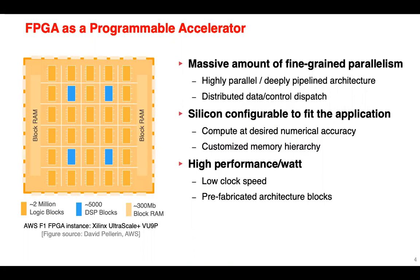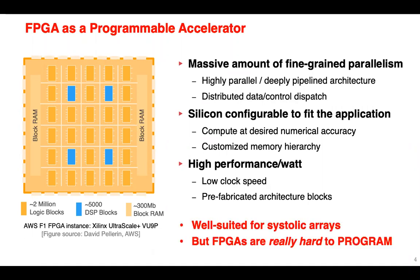FPGA is a good platform to implement all of these optimizations. The figure shown here is an FPGA used on AWS F1. Although this is not the latest FPGA, we can already see there is a lot of compute power. For example, it has around 2 million logic blocks. You can implement an 8-bit counter and 8-bit adder using around 8 lookup tables, so you can imagine how much compute we can implement using 2 million lookup tables. In addition, FPGA also provides high performance per watt, so it is very well suited for systolic arrays.